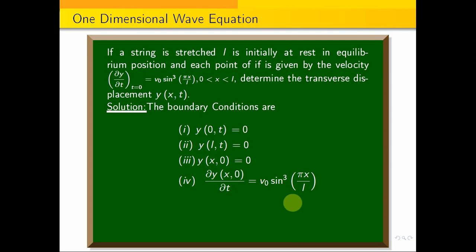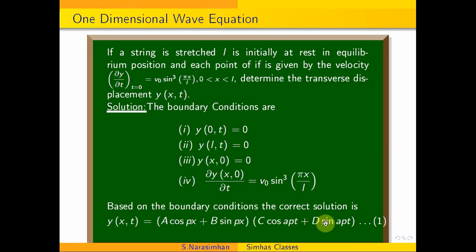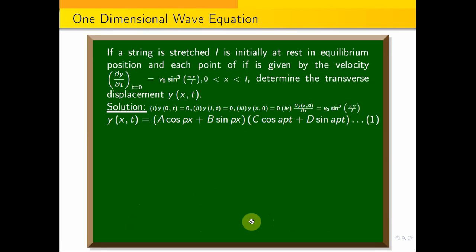Among the three possible solutions, the correct solution for this problem is y(x,t) = (A cos px + B sin px)(C cos apt + D sin apt). We need to find the values A, B, p, C, and D using the four boundary conditions.